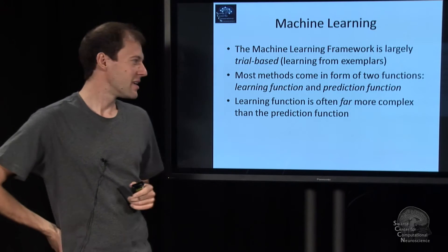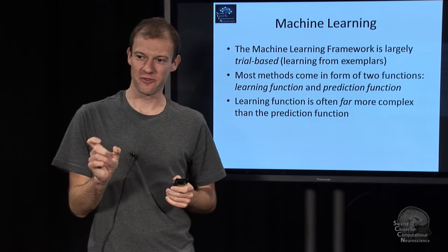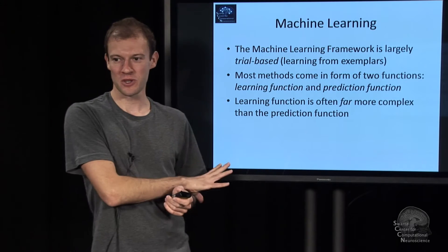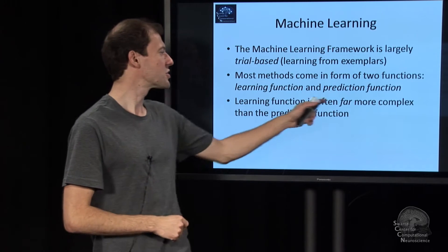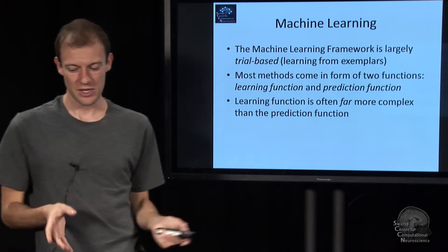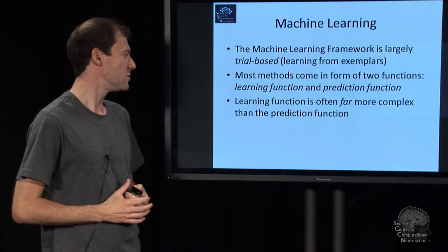So there's one more thing to say. The prediction function is usually very simple and might just look just like the ones that we sketched in previous lecture. The learning function is where most of the action happens. And that's usually, say, 10 times as complex as the prediction function.